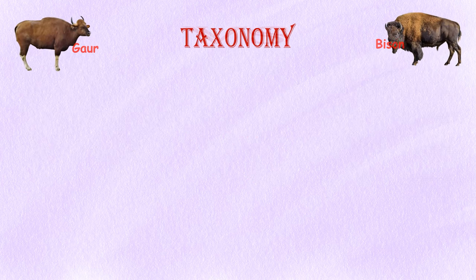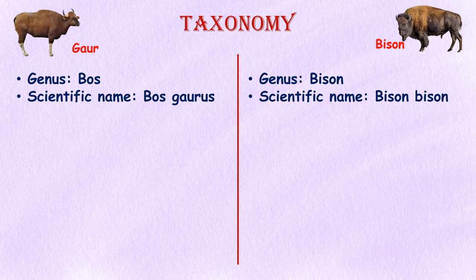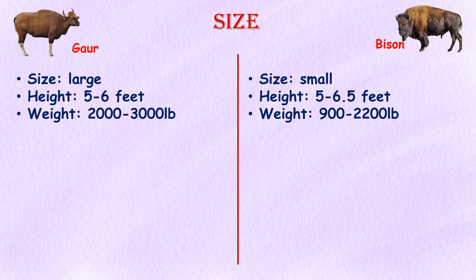Taxonomy: The Indian gaur is a member of the Bos genus and its scientific name is Bos gaurus, whereas the American bison is a member of the Bison genus and its scientific name is Bison bison.